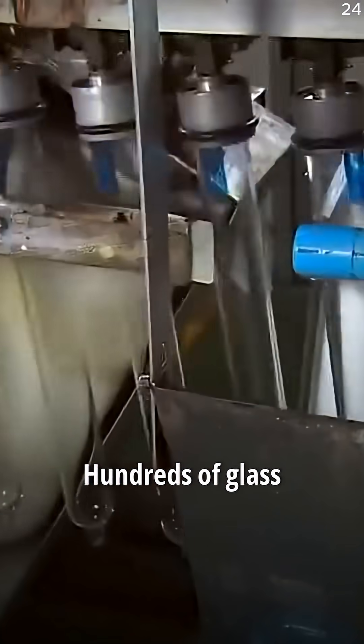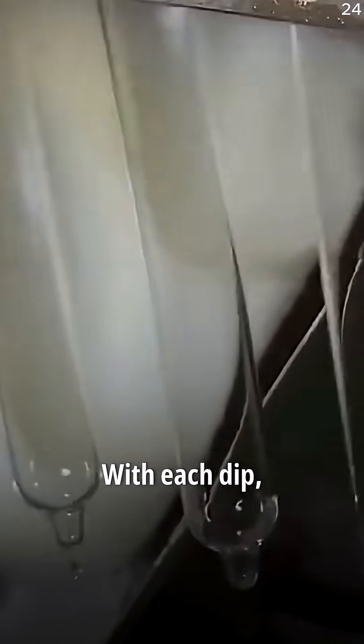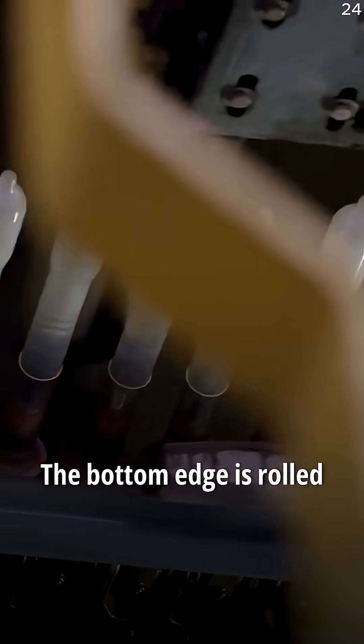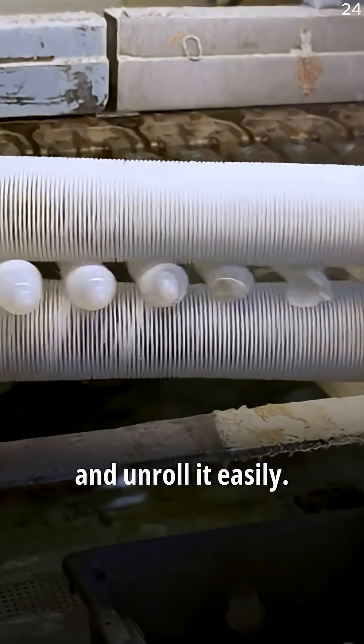Inside these factories, hundreds of glass or ceramic molds are repeatedly dipped into hot liquid latex. With each dip, a new layer forms, creating the perfect thickness. The bottom edge is rolled to make the rim, the part that helps you grip and unroll it easily.